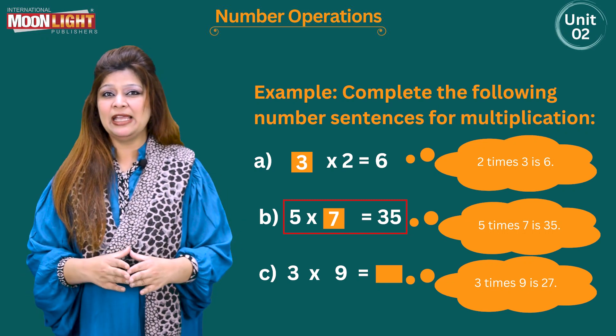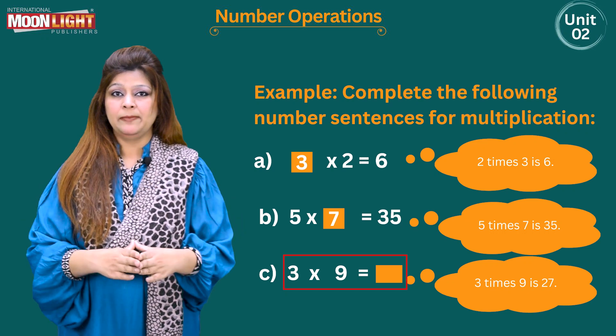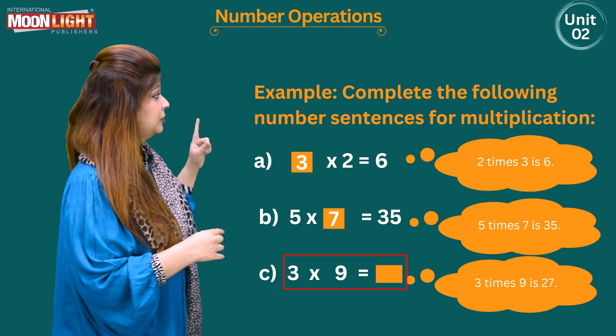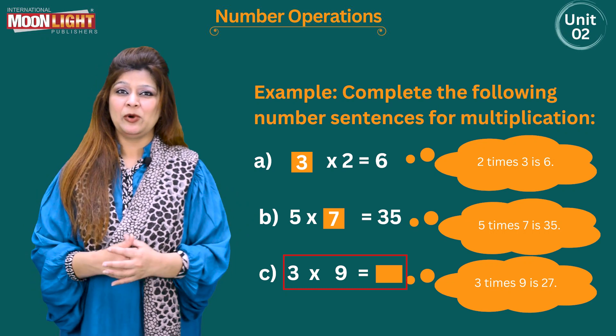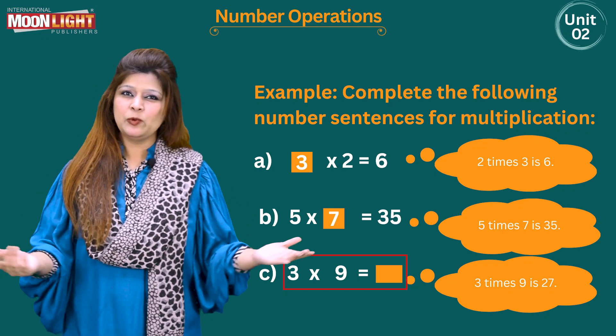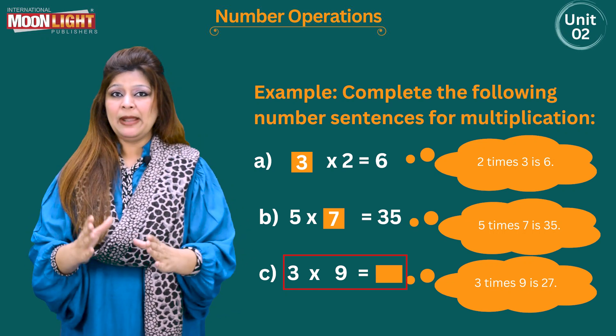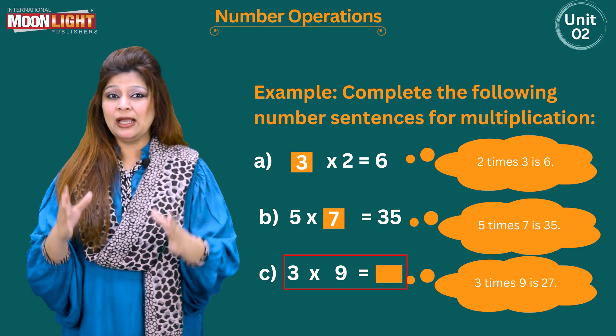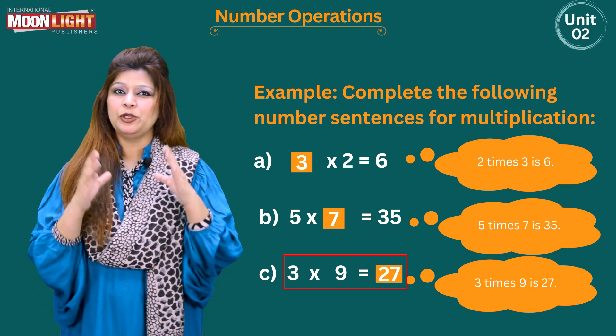Now the third part, the third part is 3 multiplied by 9 equals to symbol, then an empty box. Well, my dear student, this is very easy. You need to remember the table up to the number 9, and you know that 3 nines are 27.